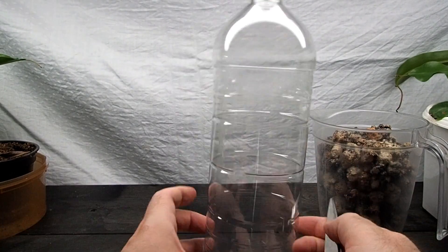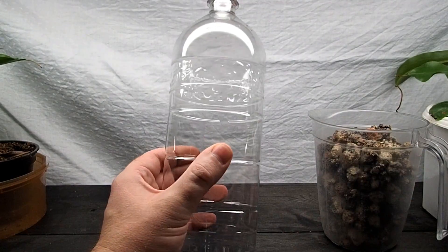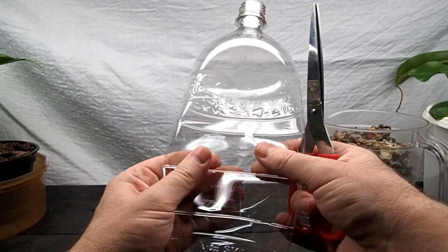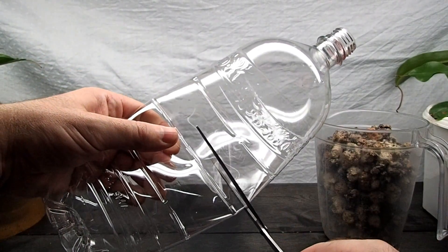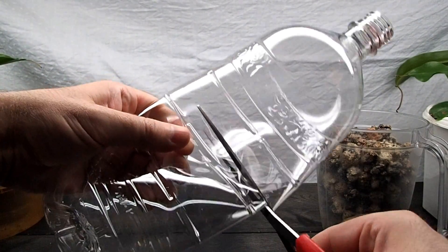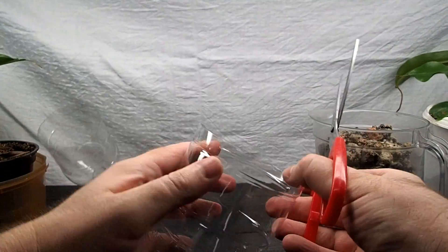Once you have marked halfway up your tank, you're going to want to cut the bottle in half. The easiest way to do this is just to squeeze the bottle like so and then cut across. I always cut a little bit further up because you can tidy it up a little bit after this.